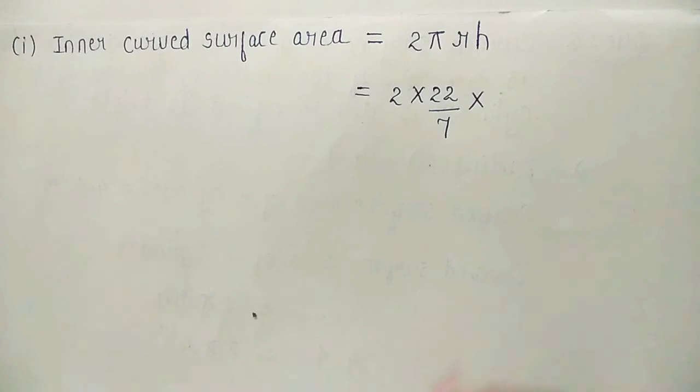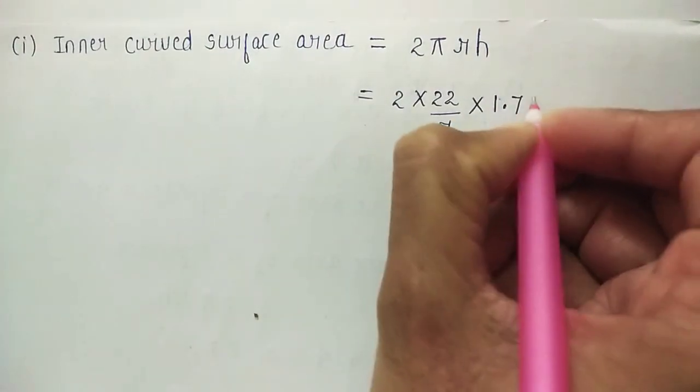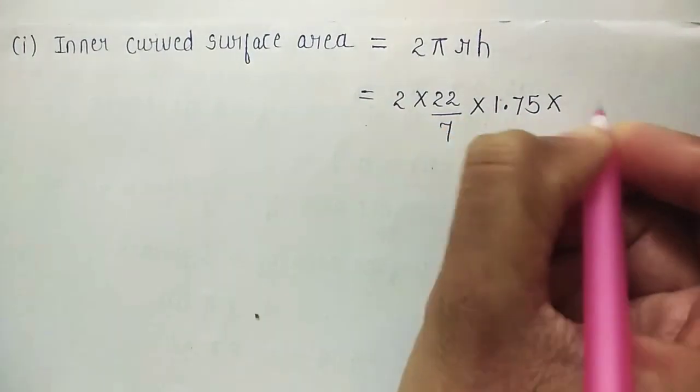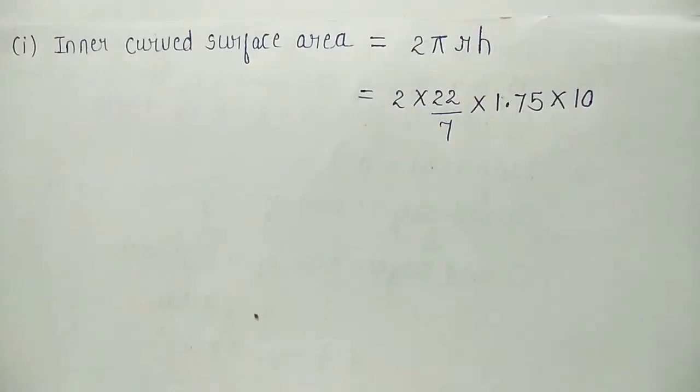we will put the values: 2 multiplied with pi is 22 divided by 7, R is 1.75 meter into height, which is 10 meter, right?